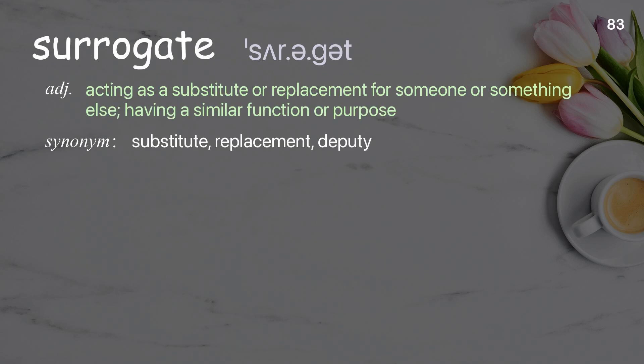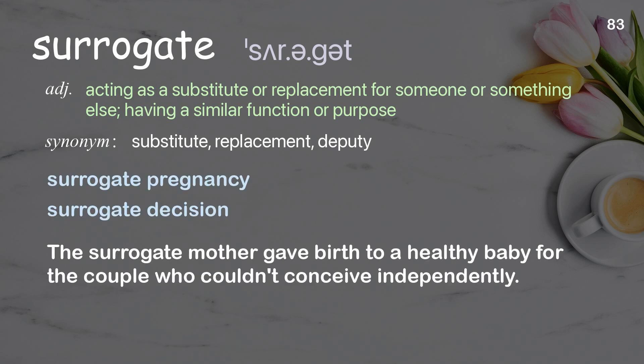Surrogate: acting as a substitute or replacement for someone or something else; having a similar function or purpose. Examples: surrogate pregnancy, surrogate decision. The surrogate mother gave birth to a healthy baby for the couple who couldn't conceive independently.